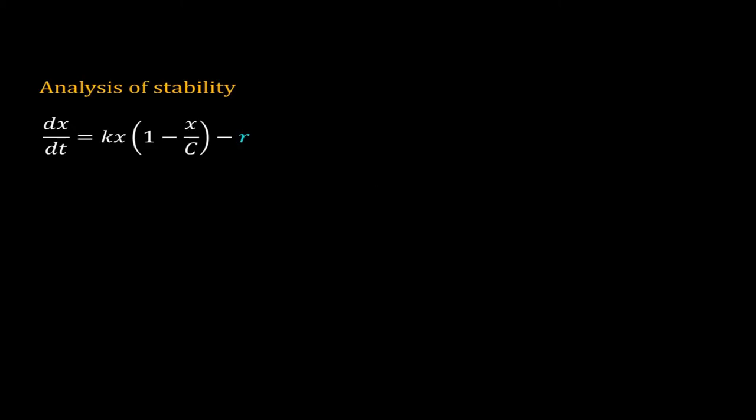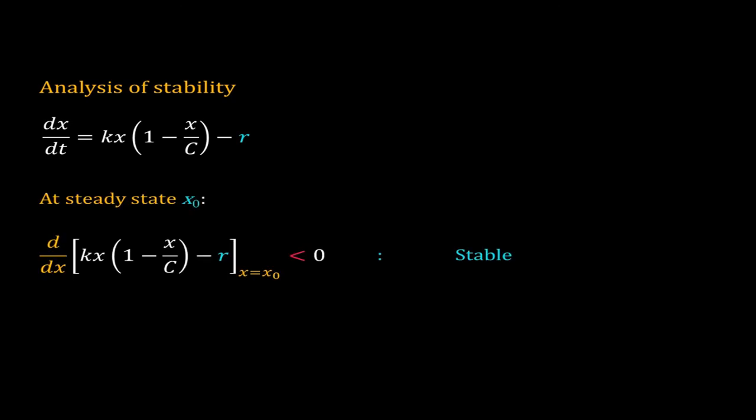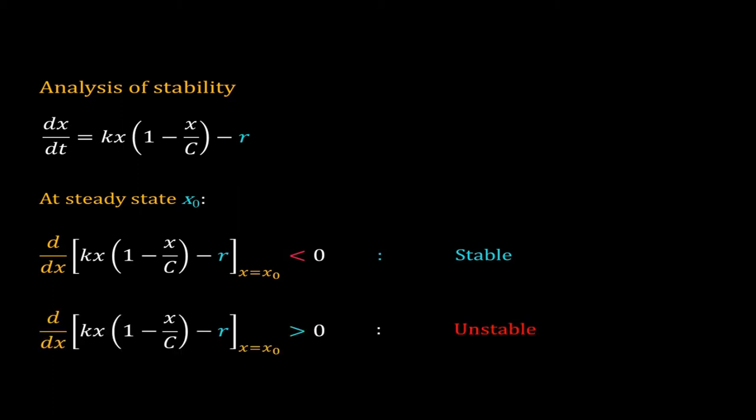Will r also affect the stability of these steady states? Let's check that. Our model is a simple one-dimensional problem. I will use a derivative-based method to check the stability of the steady state. I will calculate the derivative of the right-hand side function of the ODE at a steady state. If the derivative is negative, the steady state is stable; if the derivative is positive, the steady state is unstable.